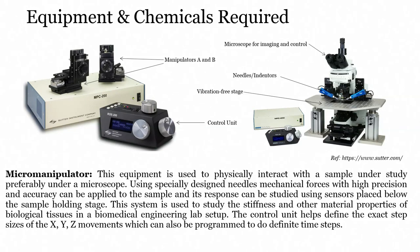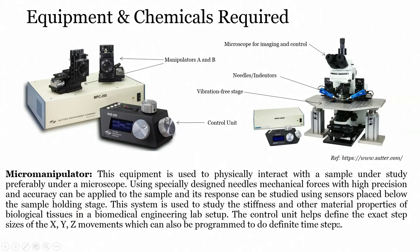This micromanipulator is from Sutter Instrument and is available in our laboratory. It is physically used to interact with the sample under study, preferably under a microscope. Using specially designed needles, mechanical forces with high precision and accuracy can be applied to the sample, and this response can be studied using sensors placed below. The system is used to study the stiffness and material properties of biological tissue in a biomedical engineering lab setup. The control unit helps define the exact step size in x, y, and z — it is not only used for z movements but also x and y movements, and it can be programmed for definite time steps.